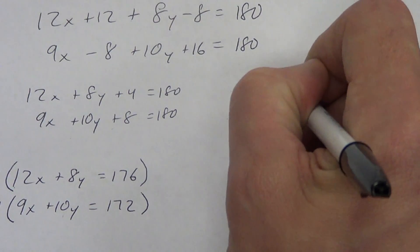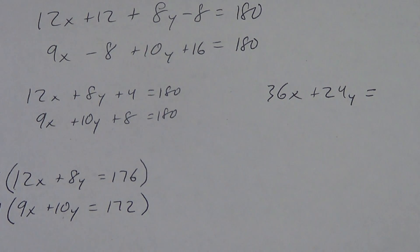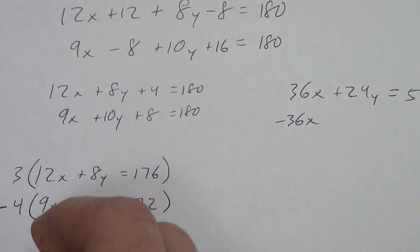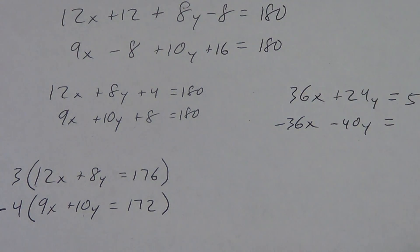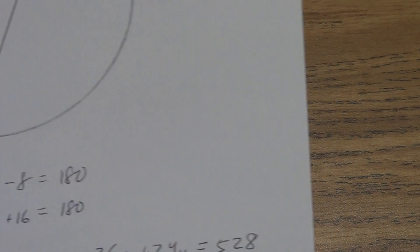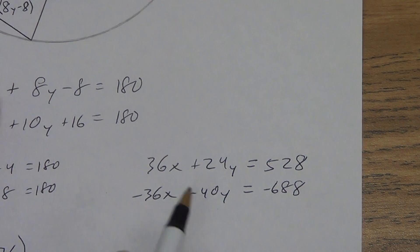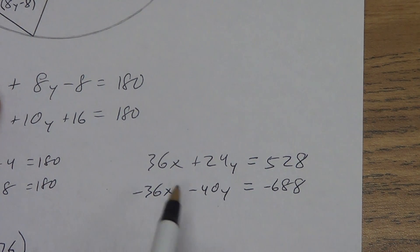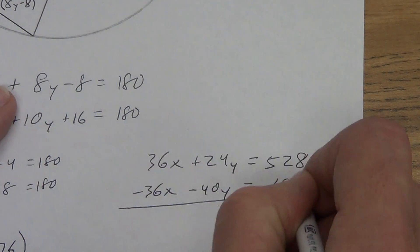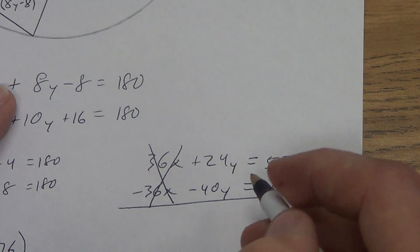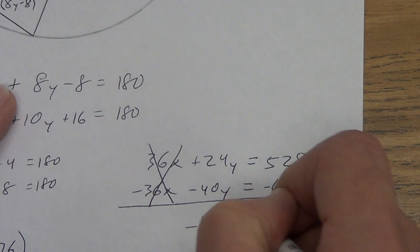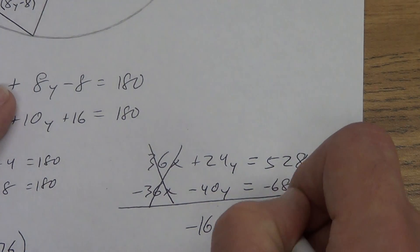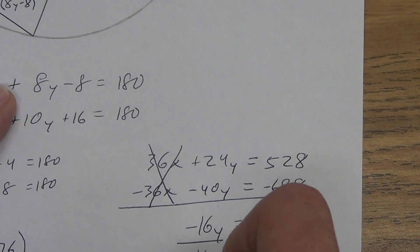That gives me 36x plus 24y equals 528. Negative 4 times everything: negative 36x, negative 40y equals negative 688. Now, why do we call it elimination? Because when we do that correctly, I'm going to combine these and combine these and combine these. That's why it's sometimes called linear combination. These cancel each other out. And these give me negative 16y. And these give me negative 160. I divide by negative 16 and negative 16, and I get y equals 10.